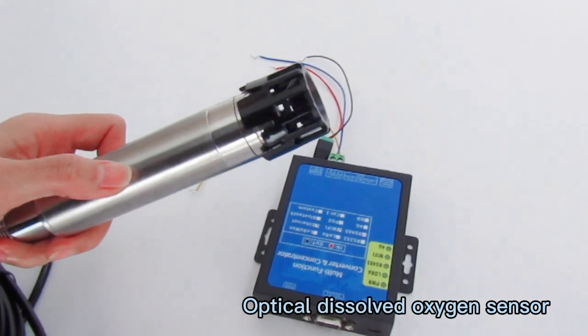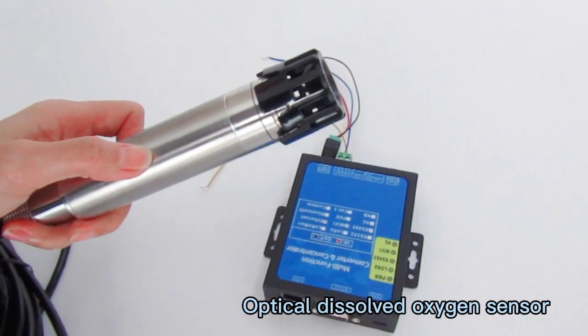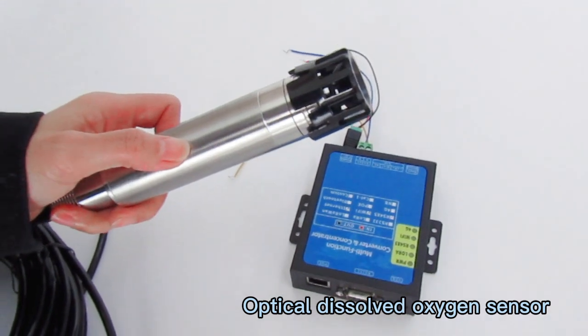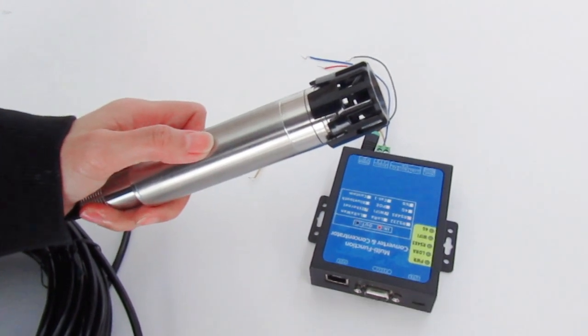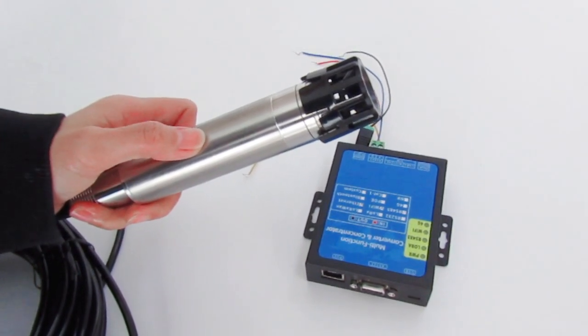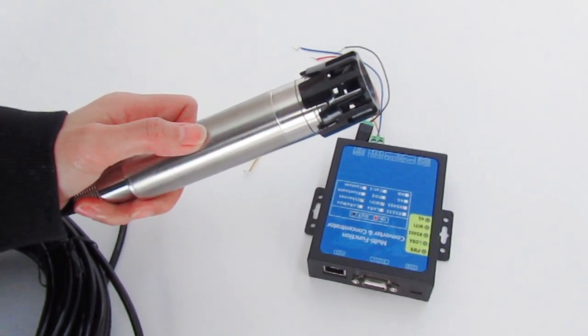Using this water DO and temperature sensor, we can test the oxygen content in the water. This sensor can be widely used in aquaculture, especially in fish ponds and rivers.